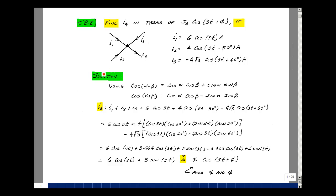Given this node where I've got I1, I2, and I3 entering, could you solve for I4 in the form of I sub a times the cosine of 3t plus phi if I1 was 6 cosine of 3t, I2 is 4 cosine of 3t minus 30, and I3 is minus 4 square root of 3 times the cosine of 3t plus 60 degrees.